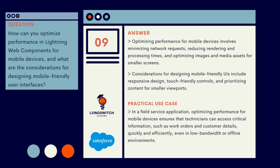Optimizing performance for mobile devices involves minimizing network requests, reducing rendering and processing times, and optimizing images and media assets for smaller screens. Considerations for designing mobile-friendly user interfaces include responsive design, touch-friendly controls, and prioritizing content for smaller viewports. In a field service application, optimizing performance for mobile devices ensures that technicians can access critical information — such as work orders and customer details — quickly and efficiently, even in low bandwidth or offline environments.